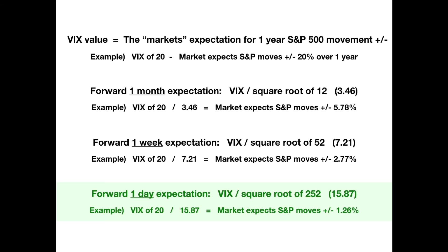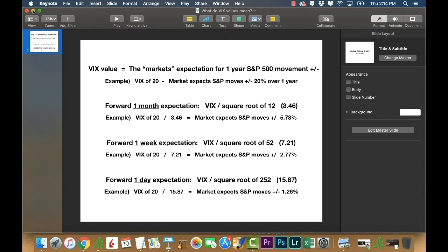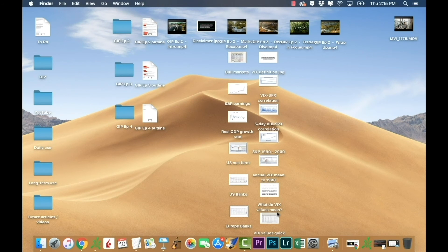You can do this over any time frame. What people typically do is calculate one day. It is important to remember that the VIX calculation is a calendar calculation, not trading days, but when going down to one day I do typically use trading days — on average 252 of them. The square root of 252 is 15.87, so a VIX of 20 implies a forward expected movement of the S&P 500 of plus or minus 1.26% per trading day.